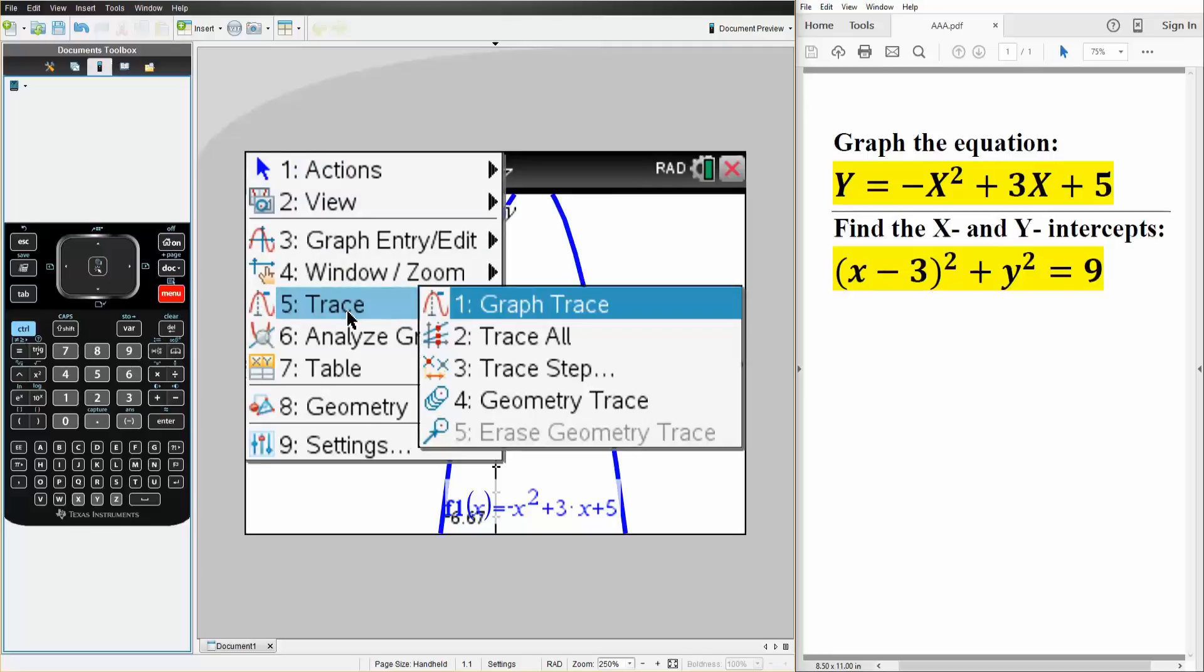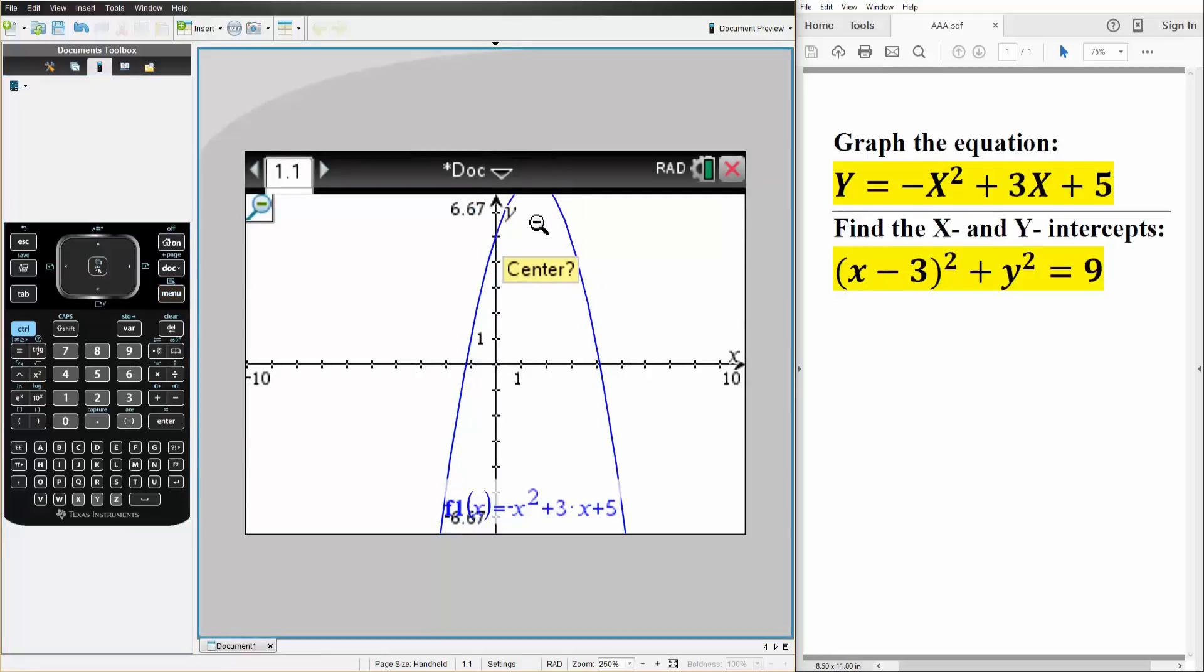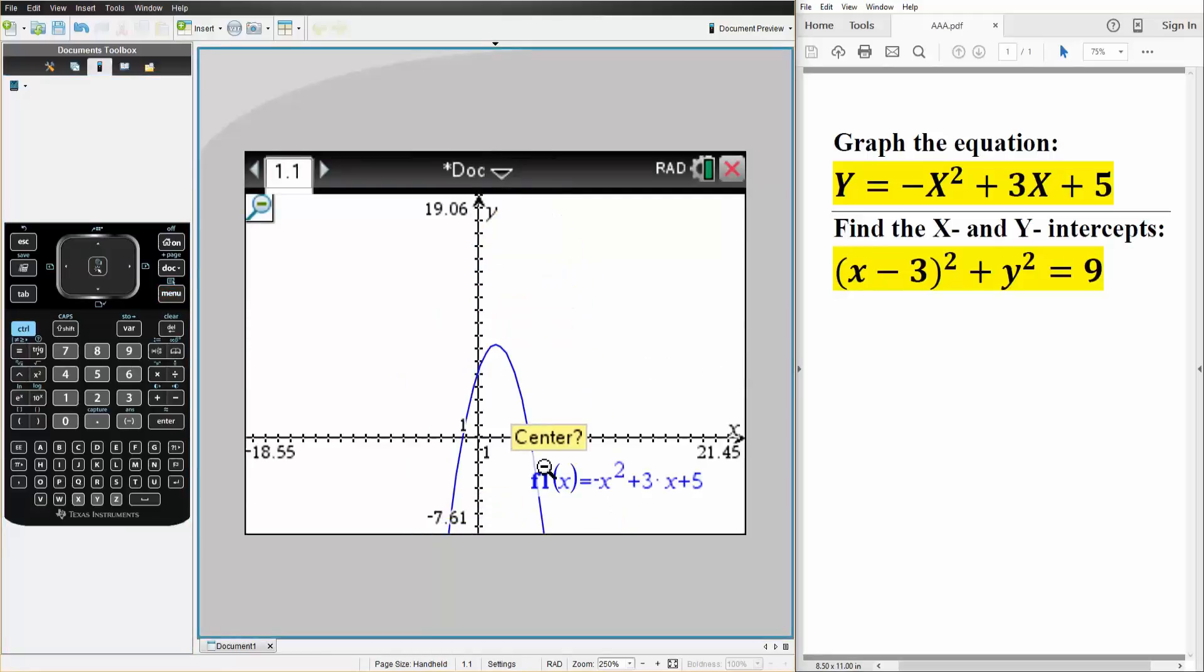We can also zoom out, so menu, we go to windows and we go to zoom out, and so this is our general shape. And that's all we want to do for this problem, just get a general idea. And the next thing we're going to do is find the x and y intercepts.